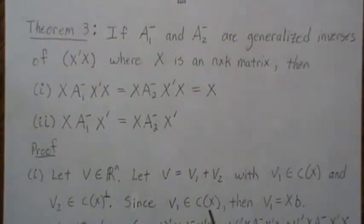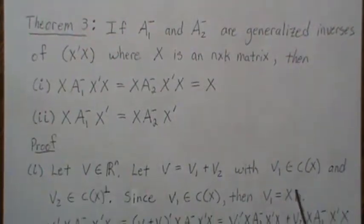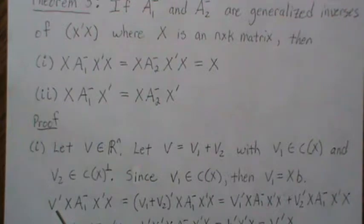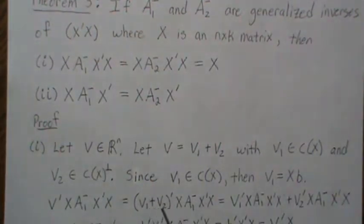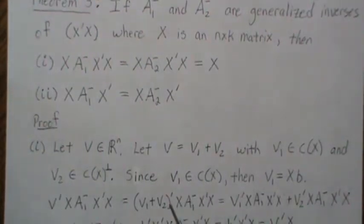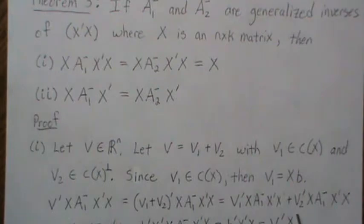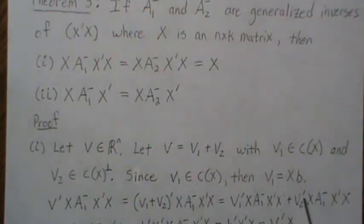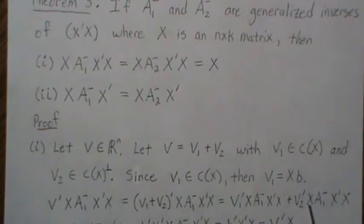Since V1 is in the column space of X, we can write it as a linear combination of the columns. Looking at the quantity V' X A1-dash X' X, we substitute V = V1 + V2. Distributing, we get V1' X A1-dash X' X plus V2' X A1-dash X' X. Since V2 is in the orthogonal complement to the column space of X, V2' X equals zero, so we're only left with the V1 piece.